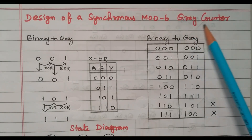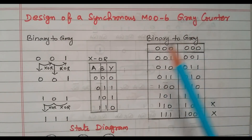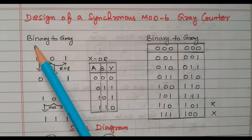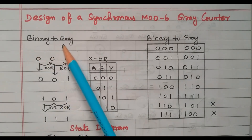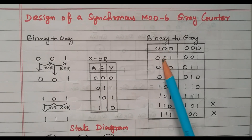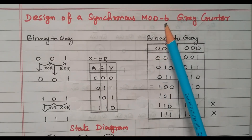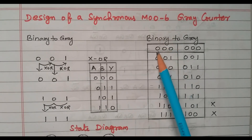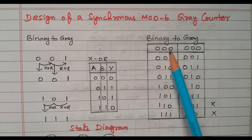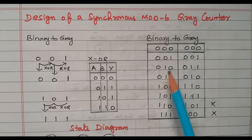We need to find the gray counter. First we need to see how to convert binary to gray. For MOD-6 there will be 6 combinations, so we take a 3-bit binary number: 000, 001, 010, and so on up to 111.